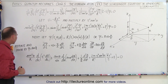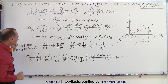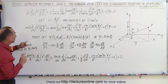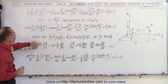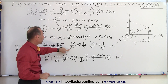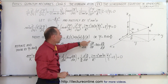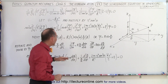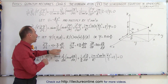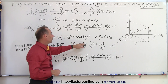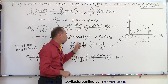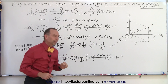The next thing we're going to do is write the partial derivative with respect to r, the partial derivative with respect to theta, and the partial derivative with respect to phi in terms of the real derivative — dR/dr, dΘ/dθ, and dΦ/dφ — where these are of course the functions and these are the variables.